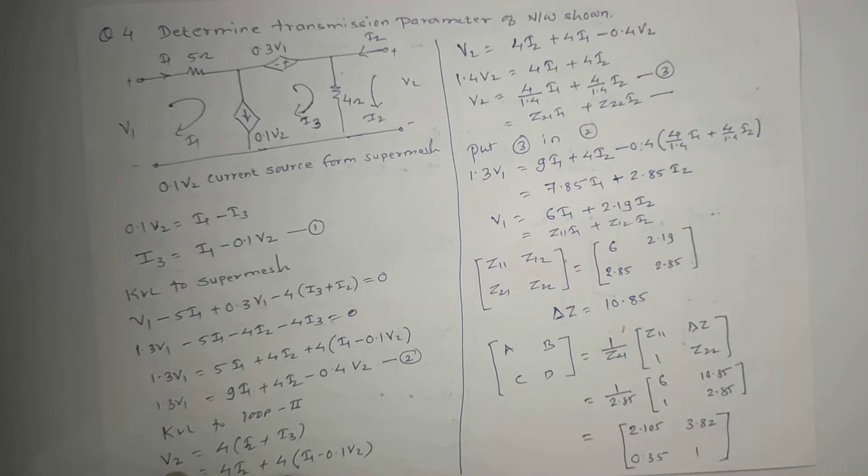We know from equation 1 I3 equals I1 minus 0.1V2. I3 is an unknown variable. In two-port network parameters, one thing to keep in mind is that any unwanted variable should be substituted and removed.